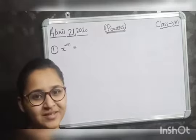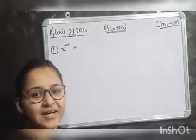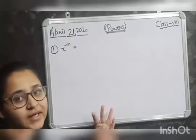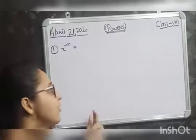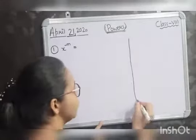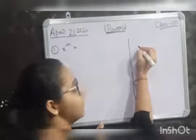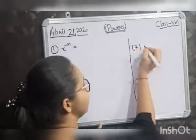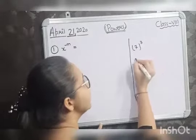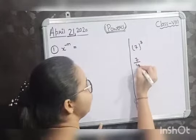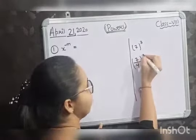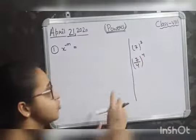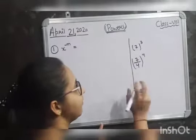Good morning dear students. Yesterday we learned the introduction of powers and exponents. We understood how to simplify a number which has the form 7 raised to the power 3, or 7 by 4 whole raised to the power 4. There were 3 forms to simplify or to write any number.